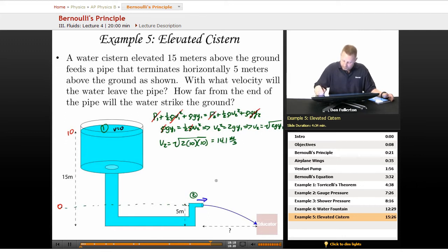So our water is going to be leaving the pipe down here with the horizontal velocity of 14.1 meters per second. Now we've got ourselves a projectile problem, where we've got a height of 5 meters, and we need to find the horizontal distance the water travels.